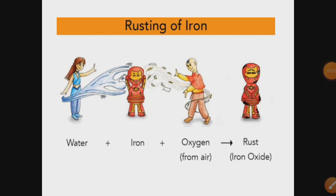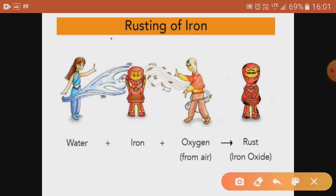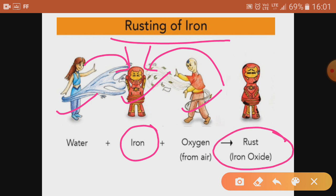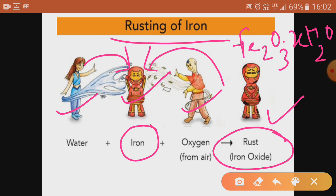An example of a chemical change is rusting of iron. Here you can see iron reacting with water and oxygen — moist air acts on the iron and ultimately the iron gains rust. This is called rusting of iron and it is a chemical change because a new substance — rust, which is hydrated iron oxide — is formed. For rust formation, moist air is required, meaning air with some moisture.